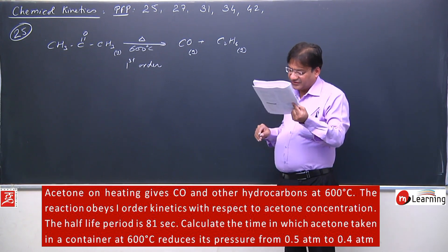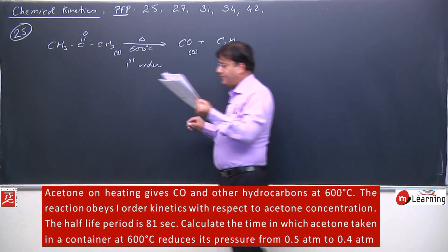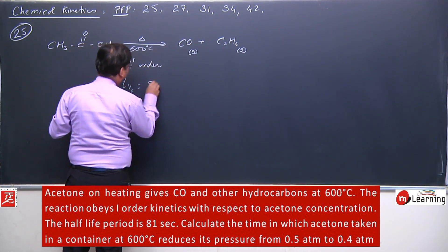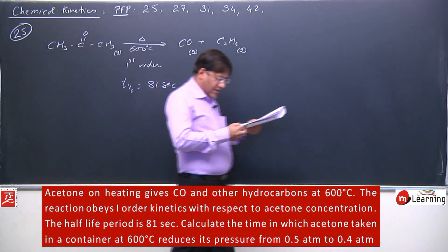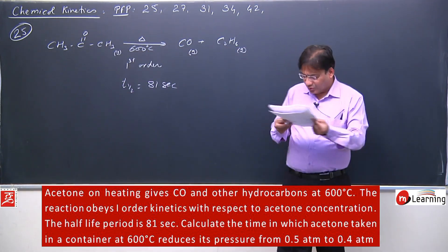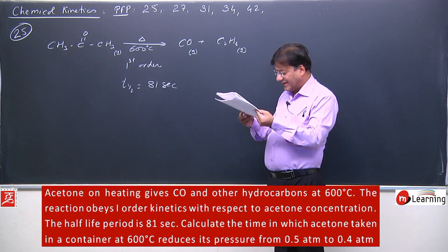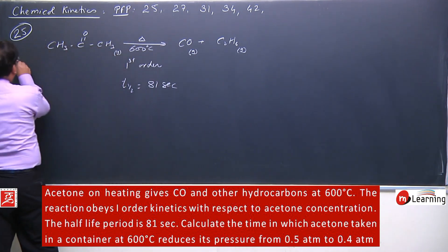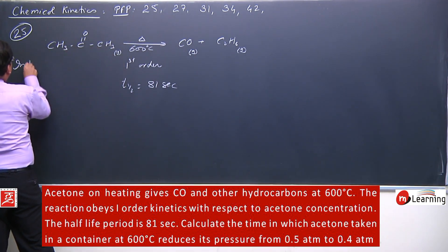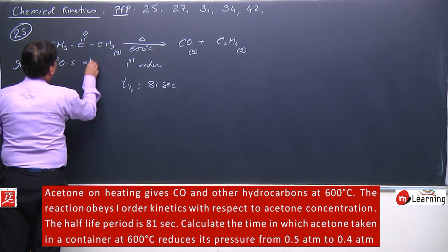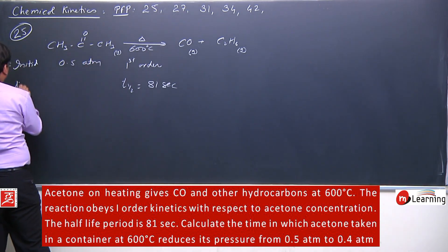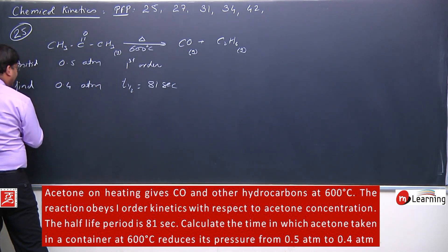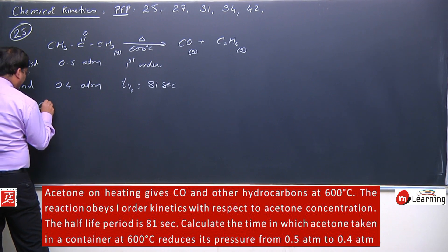The half-life period is 81 seconds. Calculate the time in which acetone taken in a container at 600 degrees centigrade reduces its pressure from initial 0.5 atmosphere to final 0.4 atmosphere.